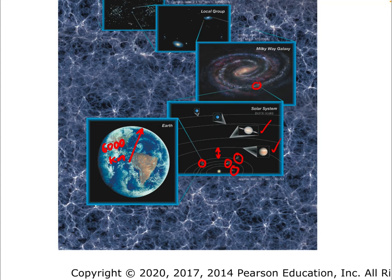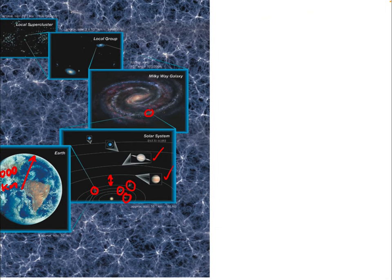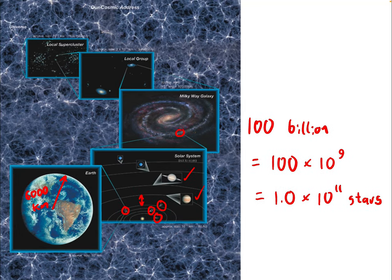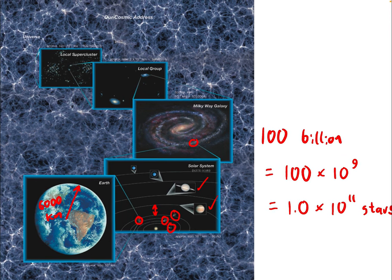A hundred billion is a huge number. In scientific notation, a billion is 10 to the 9, or one followed by nine zeros. With two additional zeros from the hundred, the number of stars in our galaxy is 1 × 10¹¹ stars — that's a hundred billion individual stars, many of which, probably most of which, have their own planetary systems.